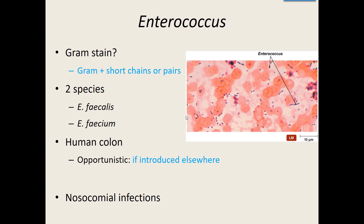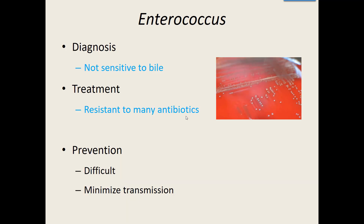Because Enterococcus and Streptococcus pneumoniae look very much alike in the lab, one way to diagnose it is to look at sensitivity to bile. This bacteria will not dissolve in bile, unlike Streptococcus pneumoniae. This bacteria is found in the intestines — that's where bile is found — so it's evolved to be around bile and is not affected by it. Treatment is getting more difficult because it is becoming resistant to a lot of antibiotics.